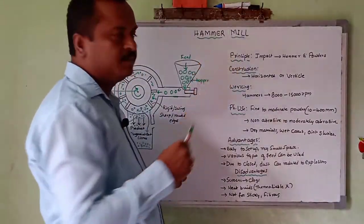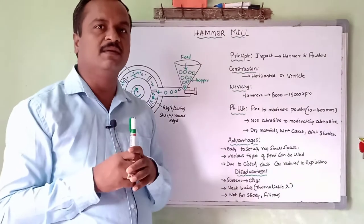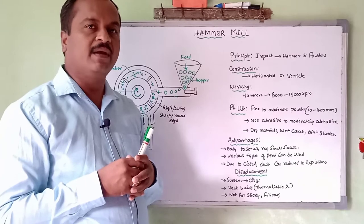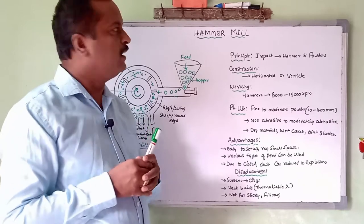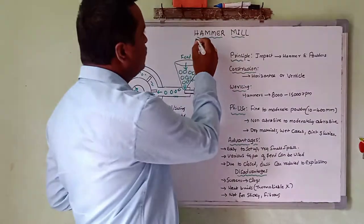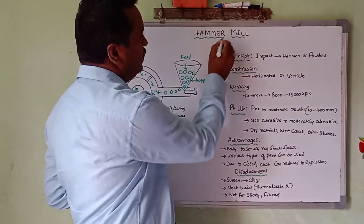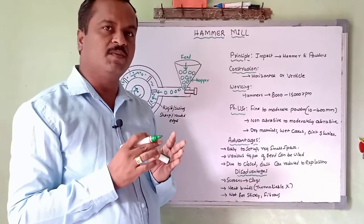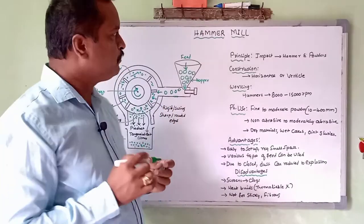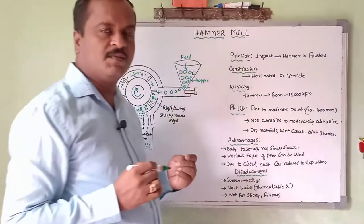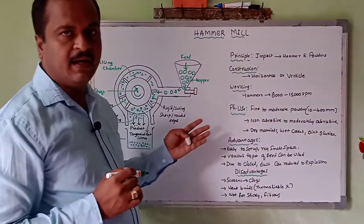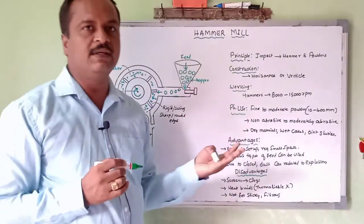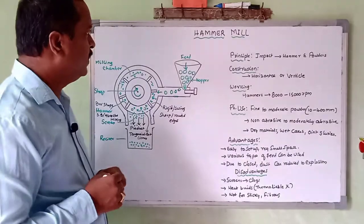Hammer mill is most important in the pharmaceutical field, because many hard materials will be made into small particles by using a hammer mill. As the name itself suggests, hammer means it contains the hammers. Let me discuss what are the principle, construction, working, and what are the pharmaceutical uses of hammer mill, and what are the advantages as well as the disadvantages of the hammer mill.